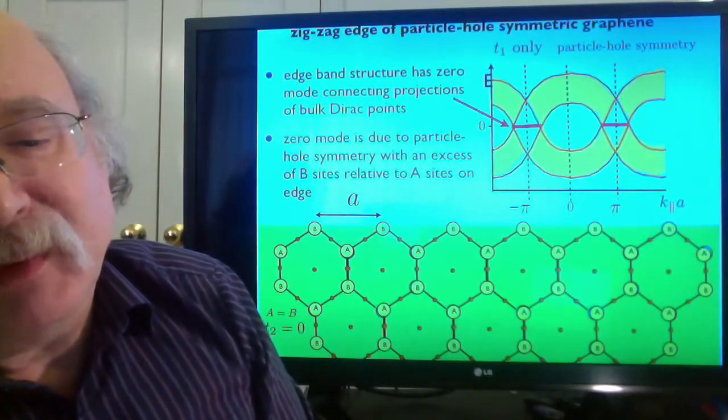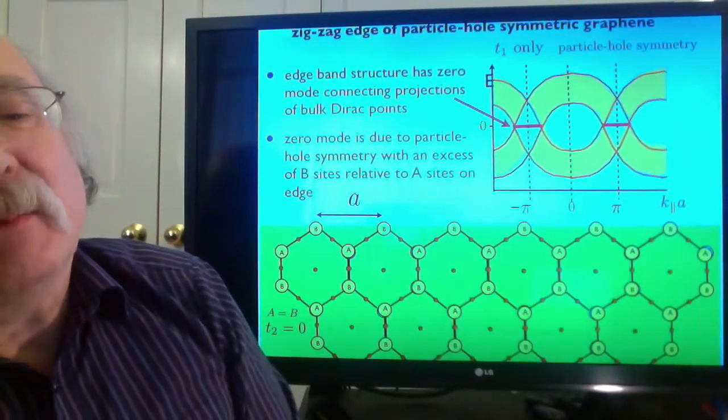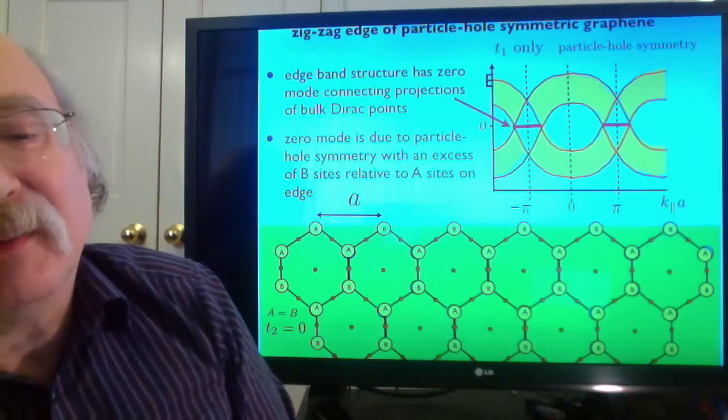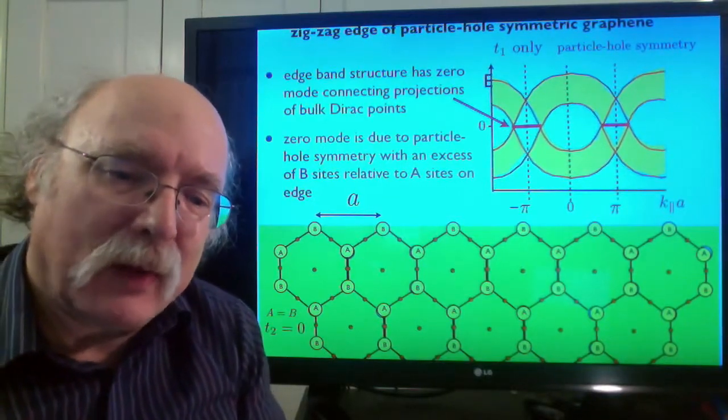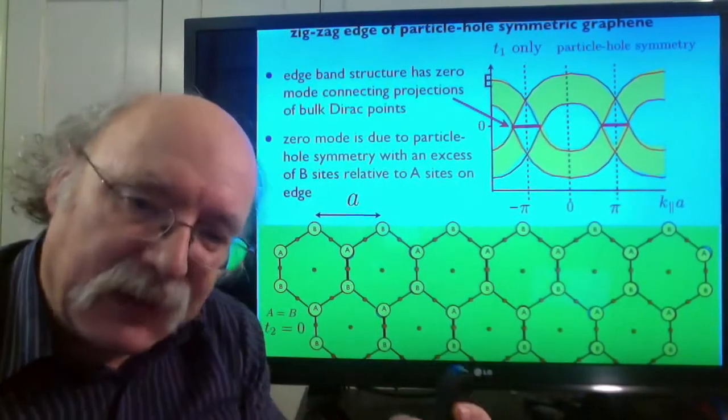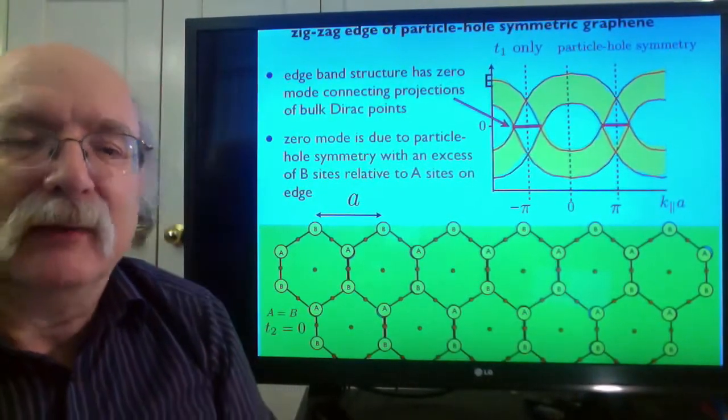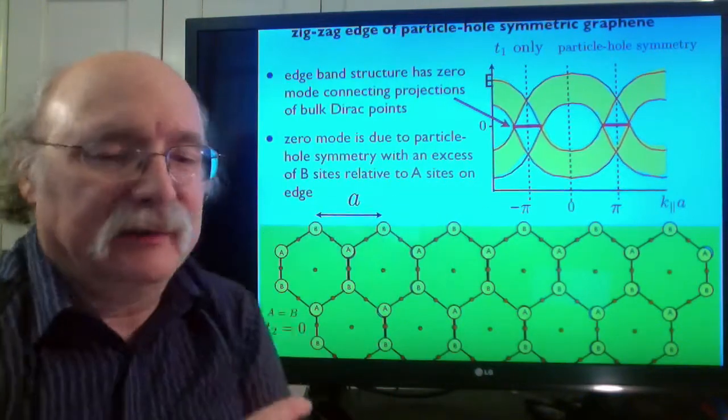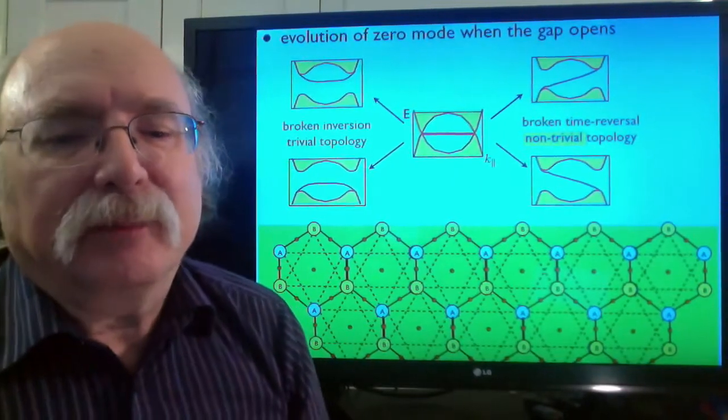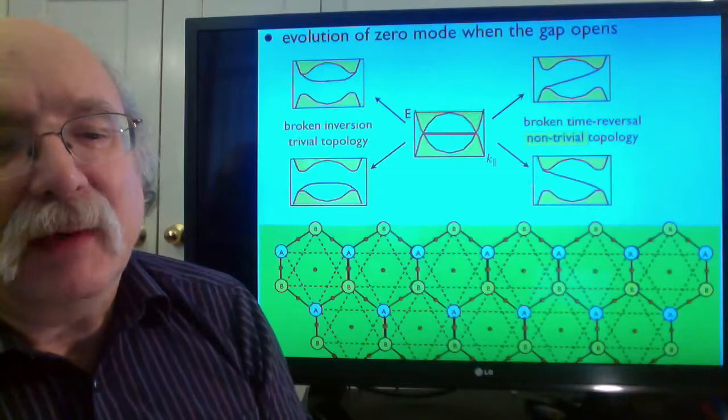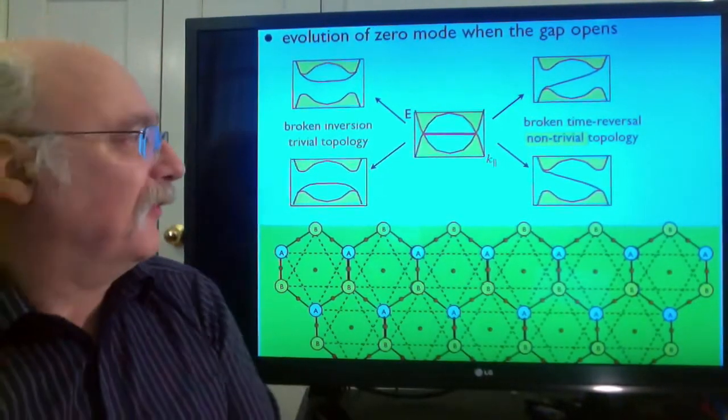These edge states arise on this edge because there is an excess number of B sites, one for every three edge unit cells relative to the A sites, and the particle hole symmetry in the bulk requires equal numbers of A sites and B sites. So any local excess of one type of site over the other at the edge appears as zero modes. When the gap opens, the edge state has to remain attached to the conduction band or the valence band at each of the two projections of the Dirac points. So there are four choices.